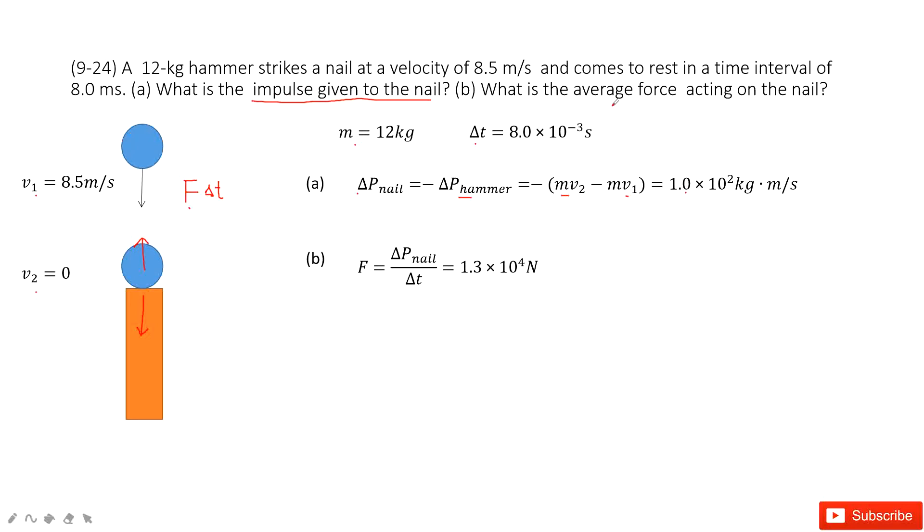The second one, we need to find the average force. Now you can see you know the change of the momentum, the impulse. And then delta t is given. You just use impulse divided by delta t, you get the final answer. Thank you.